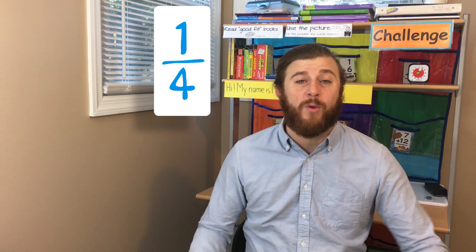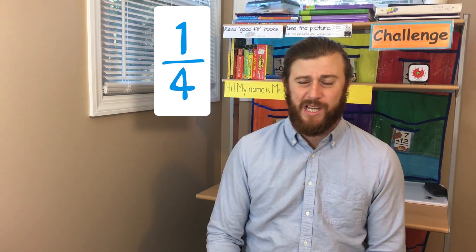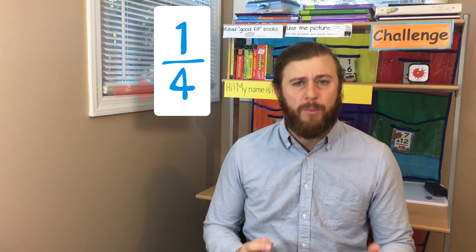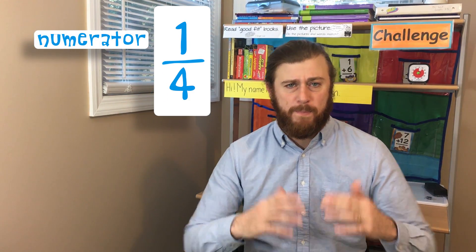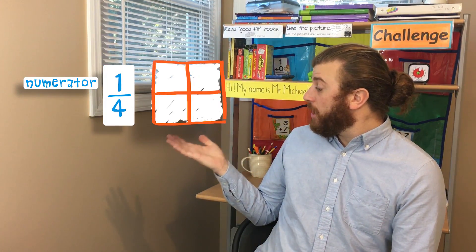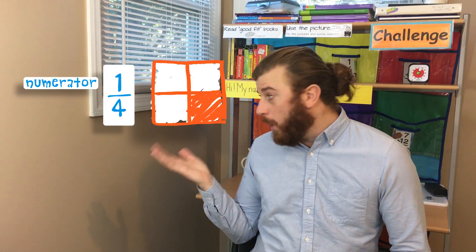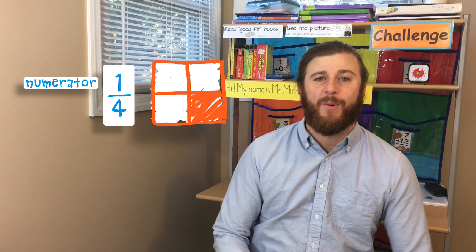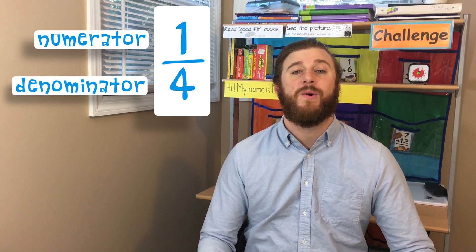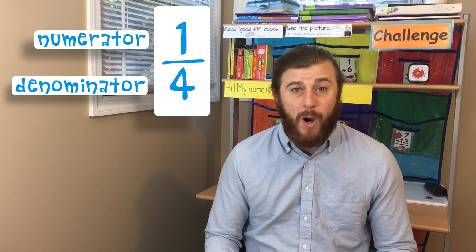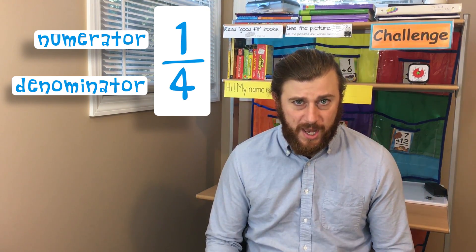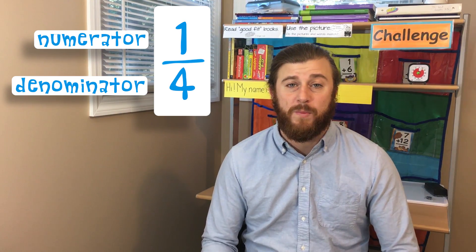Let's take a look at our example, one fourth. There are two numbers — a number up top and a number on bottom. The number up top is called the numerator and it represents the part of the whole. That means if we had a box cut into four pieces, one of those pieces would be shaded in. The number on the bottom, or the denominator, represents how many pieces there are in total. So for the fraction one fourth, we have a box cut into four pieces and one of those four pieces is shaded in.